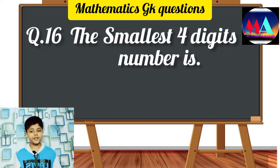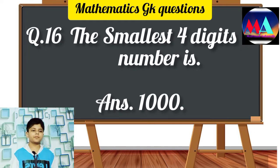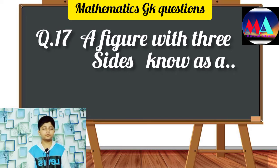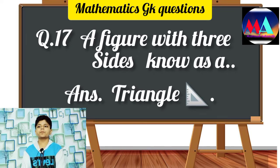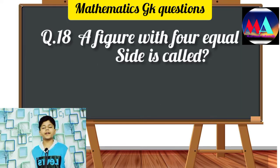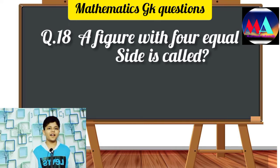Question number 16: What is the smallest four-digit number? Answer: 1000. Question number 17: A figure with three sides is known as? Answer: Triangle. Question number 18: A figure with four equal sides is called? Answer: Square.